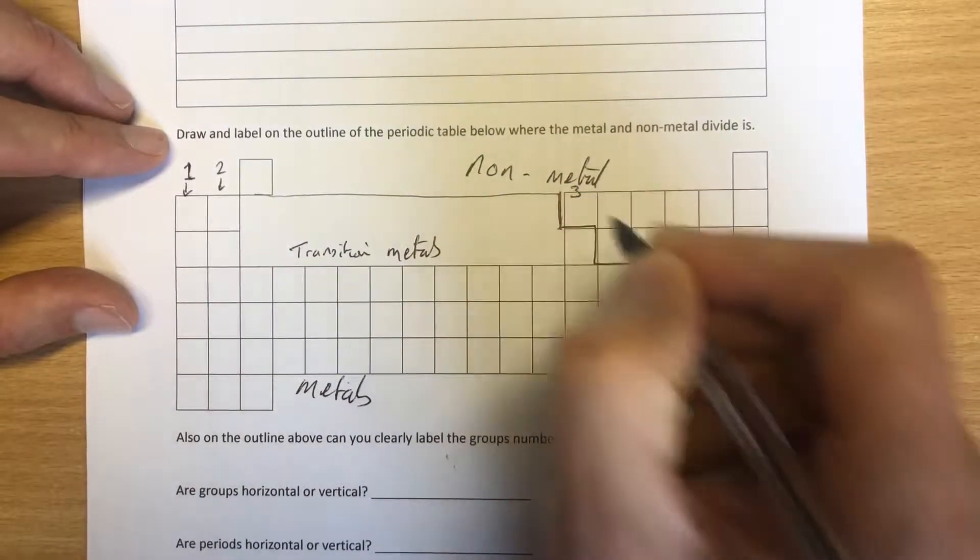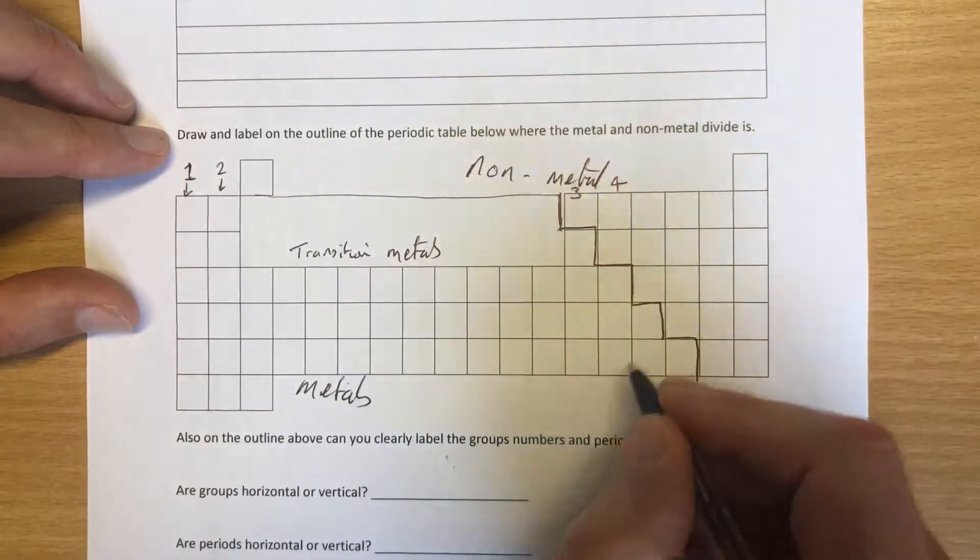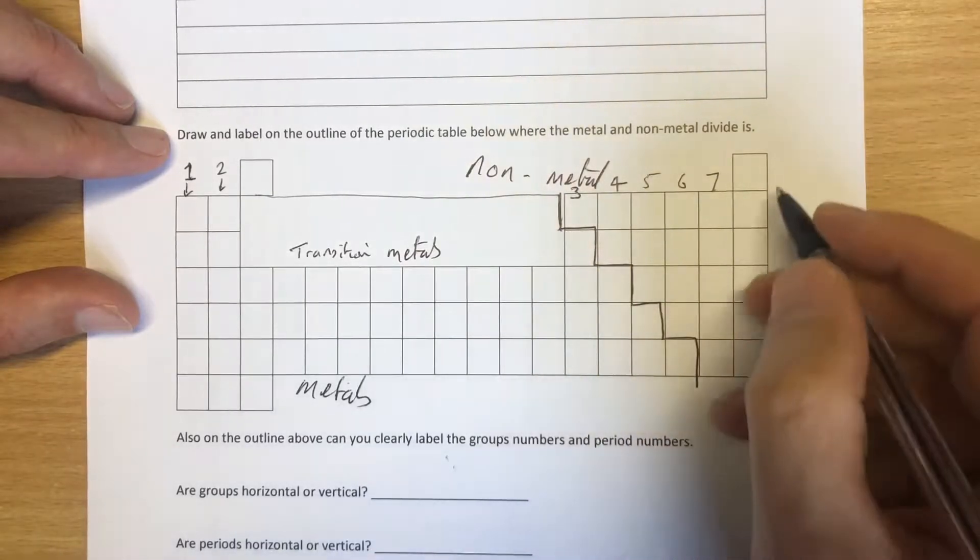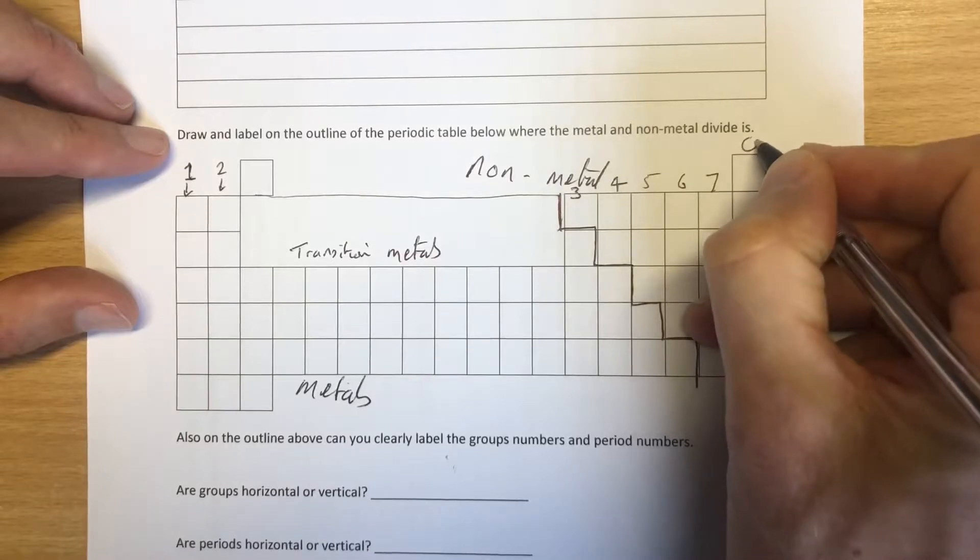Group three, let's squeeze three in there. This is group four. This is group five. That's six and that's seven. Sometimes people think this is group eight. No, probably not. It would be nice if it was. It's group zero.